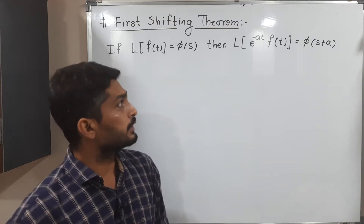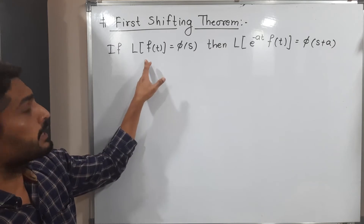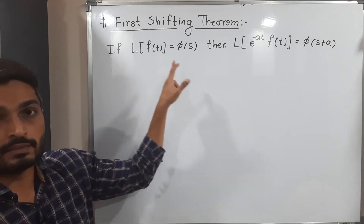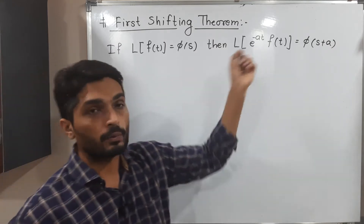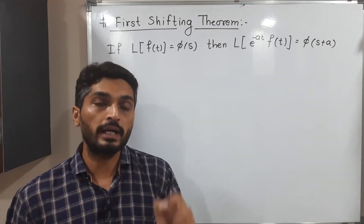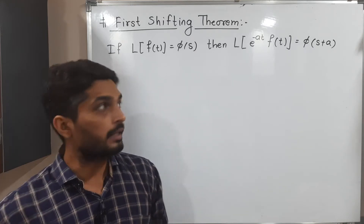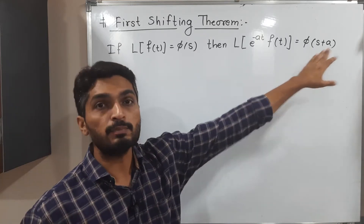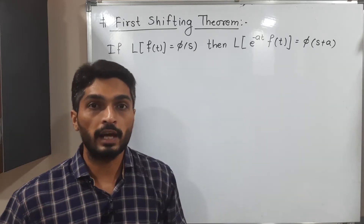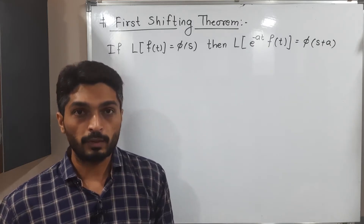The First Shifting Theorem states: if Laplace of f(t) is φ(s), and when you have e raised to minus at as a multiple of f(t), then we will have φ(s + a). So this is what we have to prove.